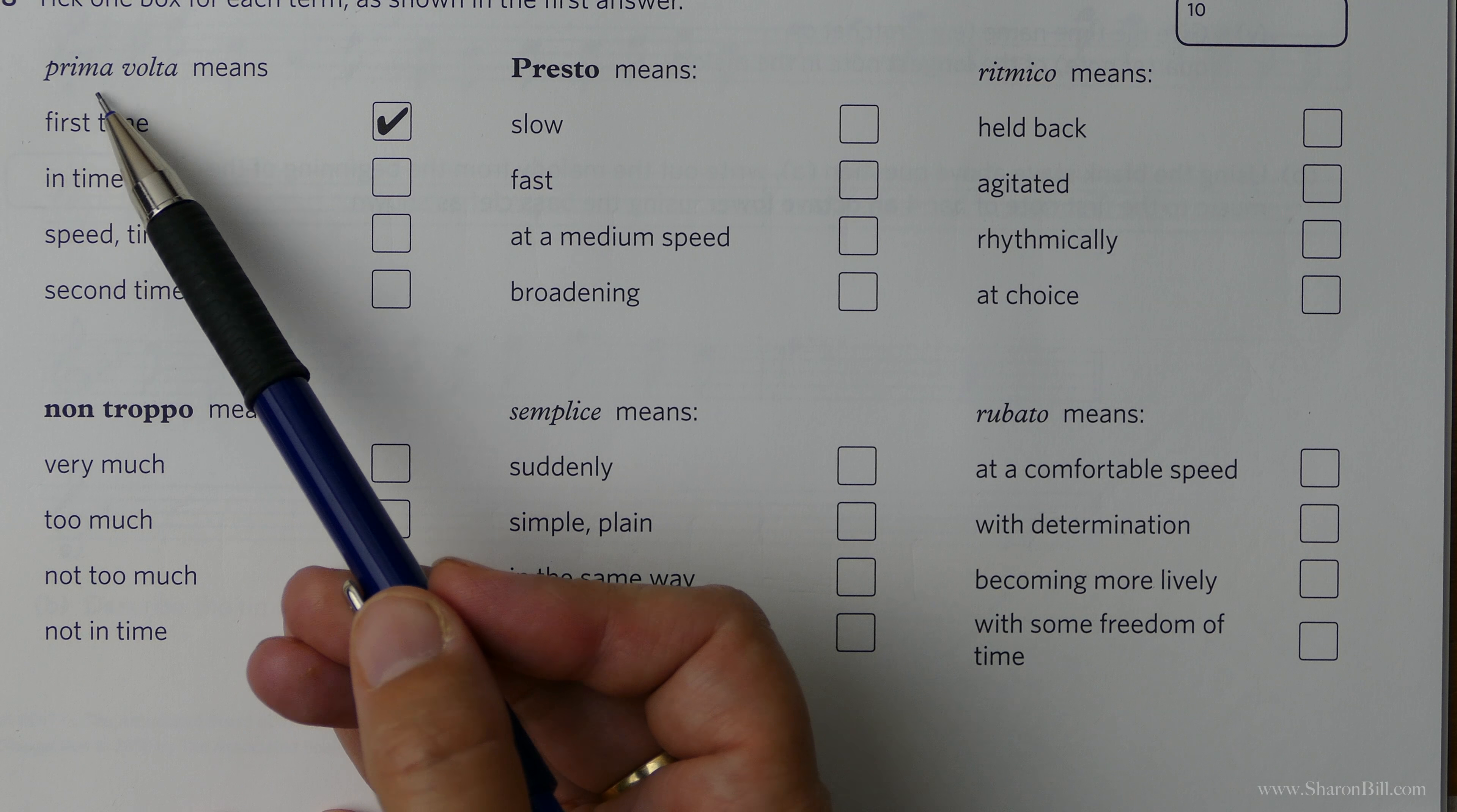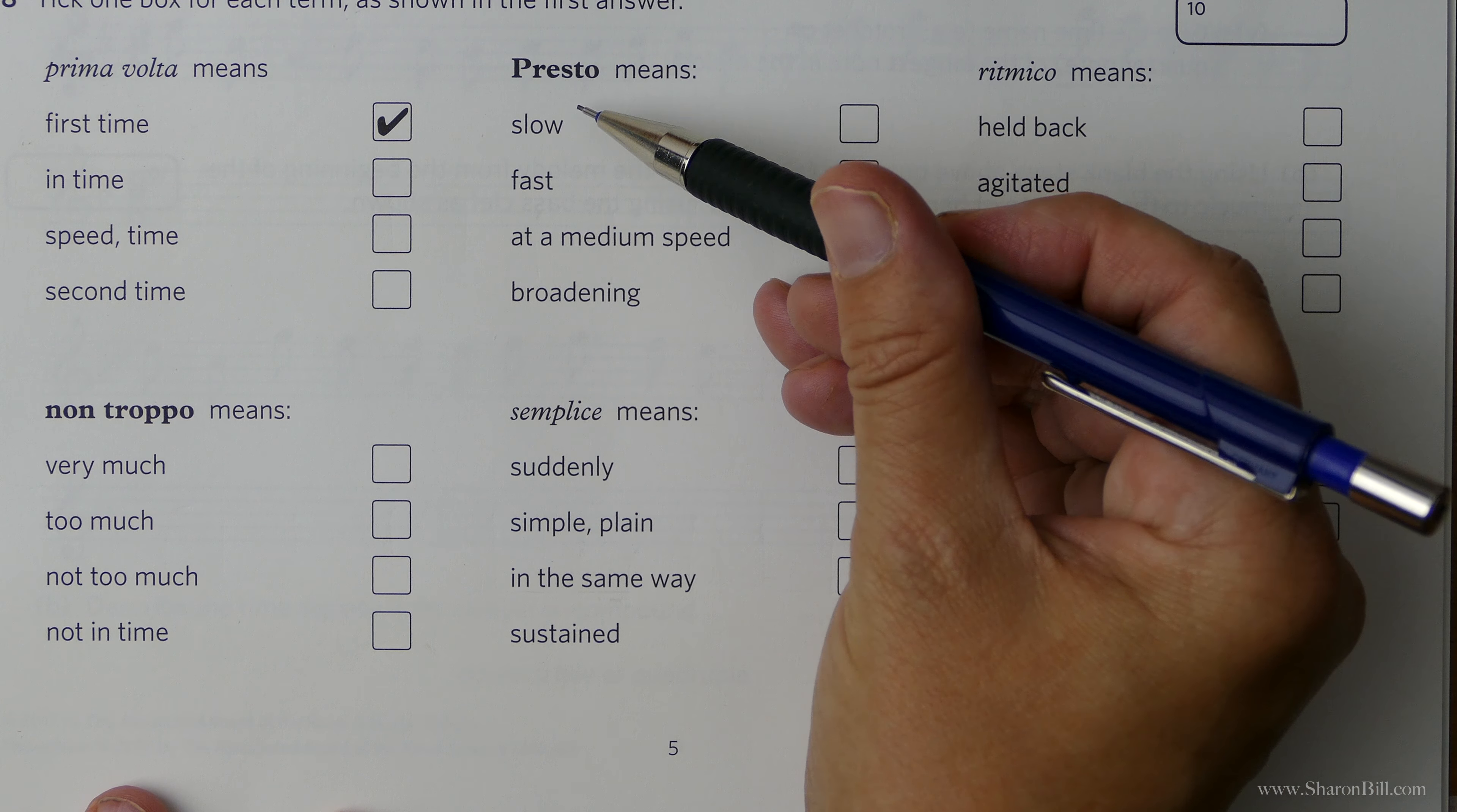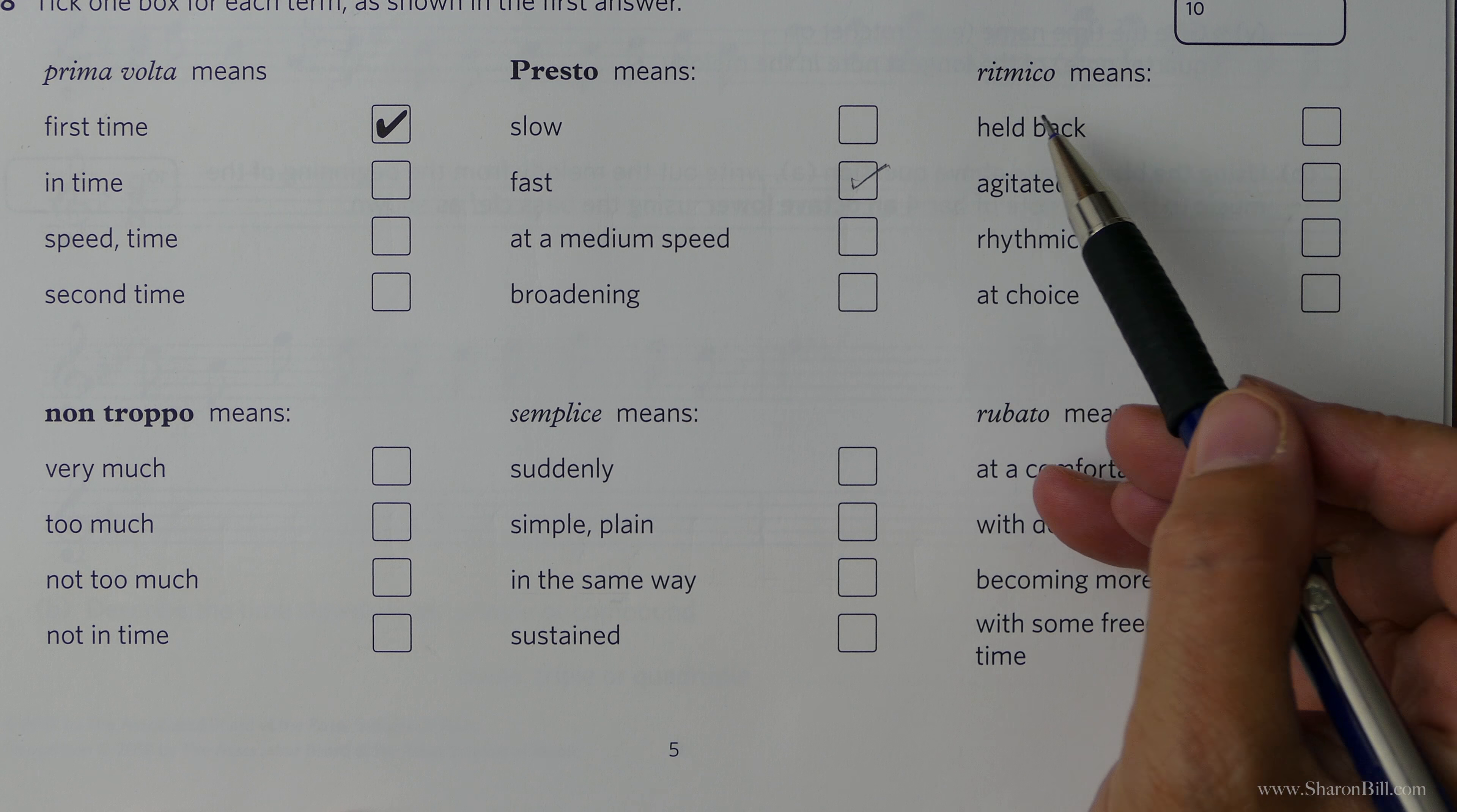They've already given this first one. Prima Volta means first time. That's not too difficult to remember. Prima, like the Prima Ballerina is your first ballerina. So now Presto means fast. I always imagine some Italian ordering the coffee quickly there. Presto, Presto. Whatever it takes, as bizarre as you need it to be just to help you to remember them.